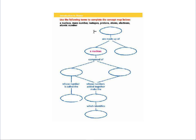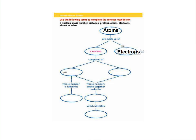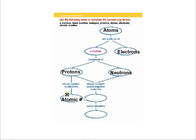In this one we're working on a flow chart — use the following terms to complete the concept map: nucleus, mass number, isotopes, protons, atoms, electrons, and atomic number. Atoms is at the top: atoms are made up of a nucleus and electrons. A nucleus has two parts: protons and neutrons. Protons give us the atomic number. Protons plus neutrons added together make up the mass number. The mass number, because it's specific to each isotope, identifies isotopes — like carbon-12 and carbon-13 are different isotopes. That finishes off the intro to atoms unit.